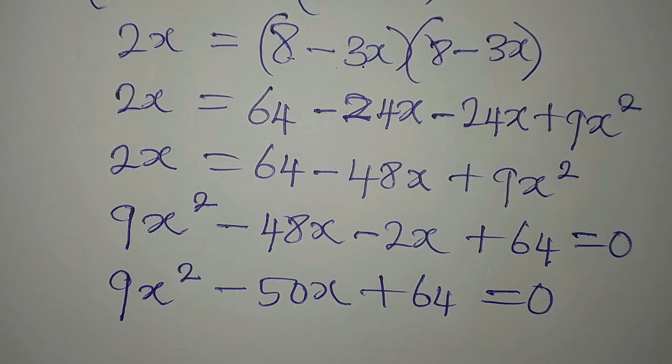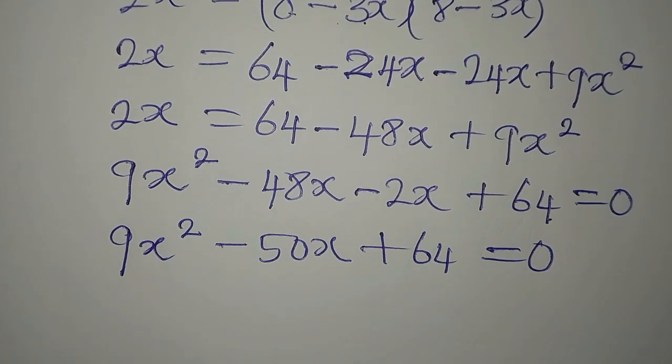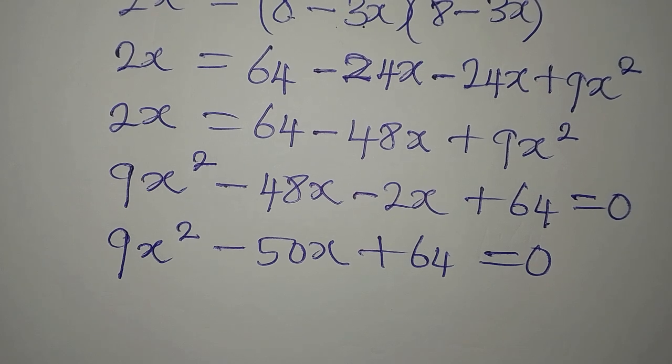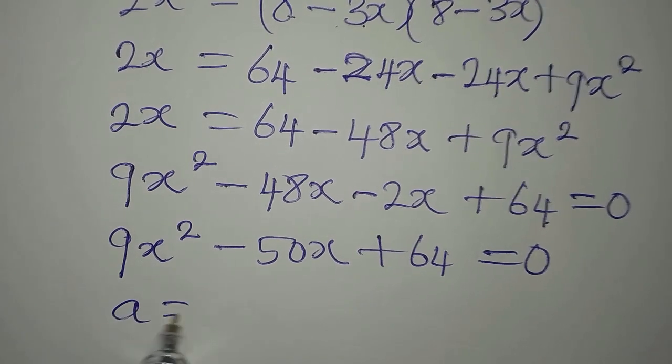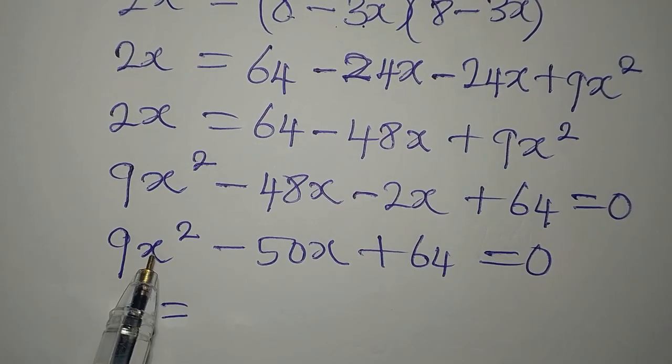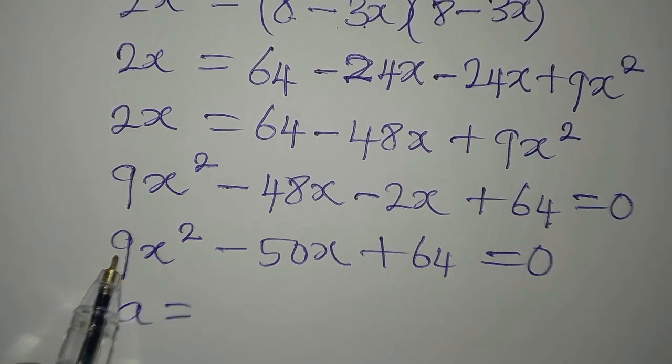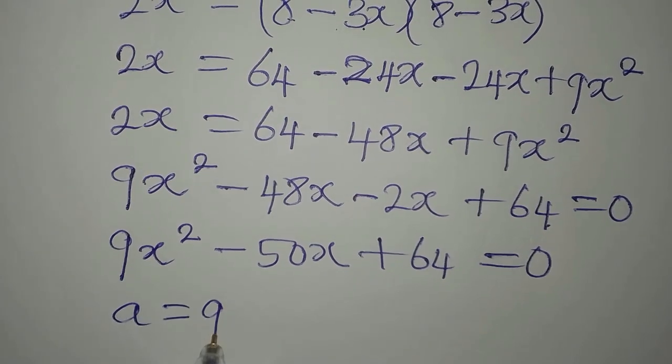We're going to solve this using the formula method. Remember that the formula has A, B, C. Our A is the coefficient of the first term, which is x squared, so the coefficient is 9. So A is 9.